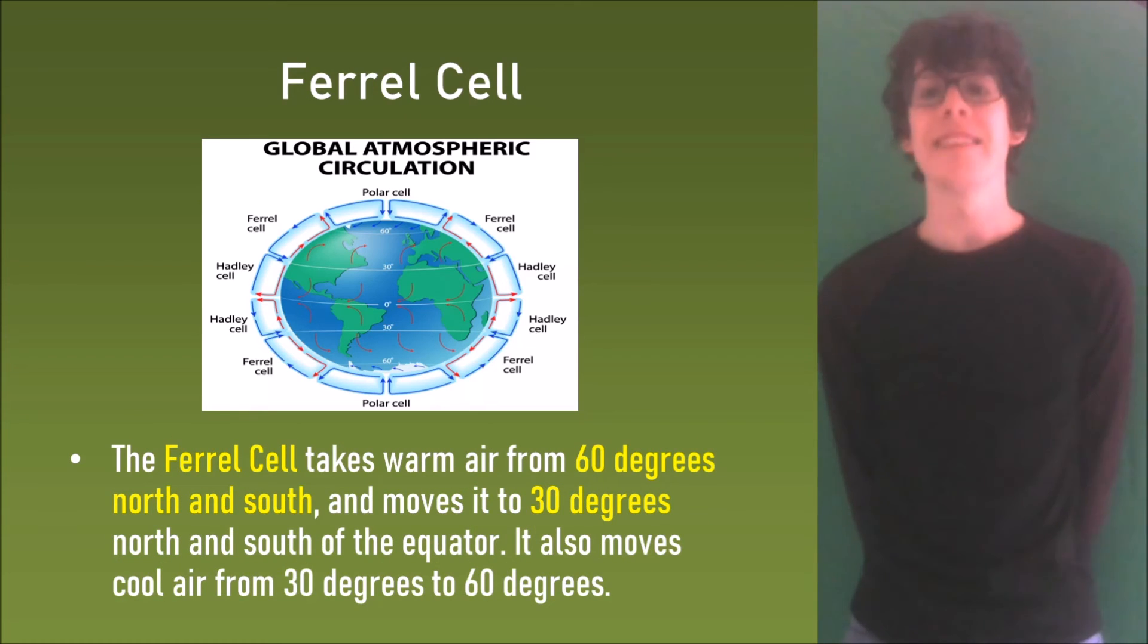The Ferrel cell takes warm air from 60 degrees north and south and moves it to 30 degrees north and south of the equator. It also moves cool air from 30 degrees to 60 degrees and you can see all of this on this diagram.